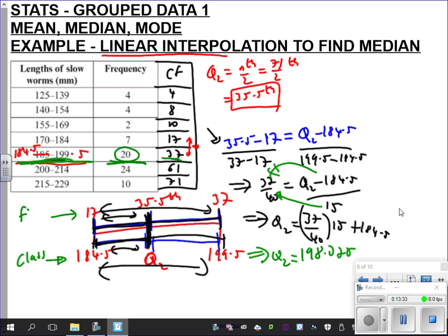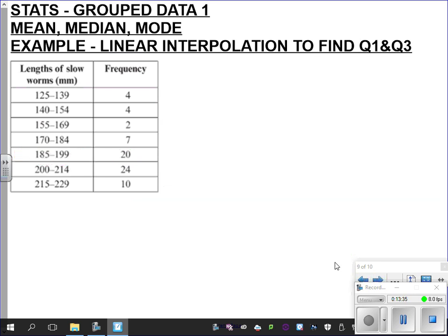Let's try that again to find Q1 and Q3 then this time. So hopefully we're getting what's going on. So cumulative frequency 4, 8, 10, 17, 37, 61, 71. Let's find Q1 this time.